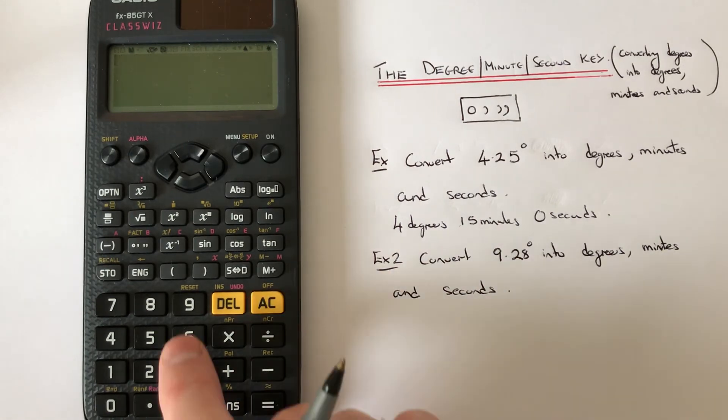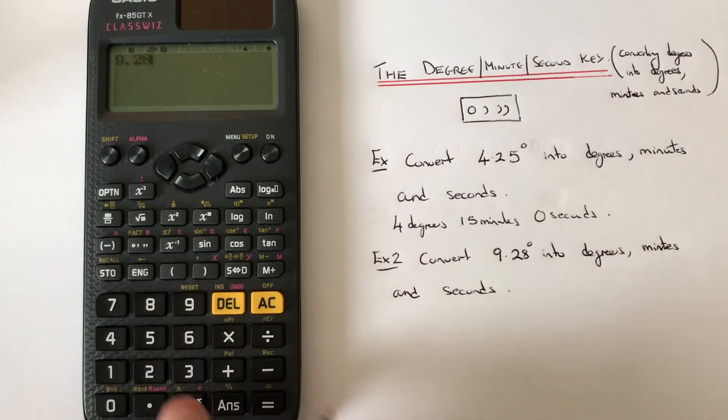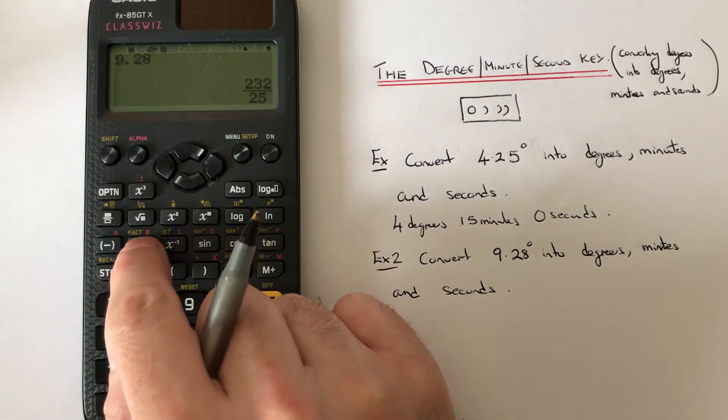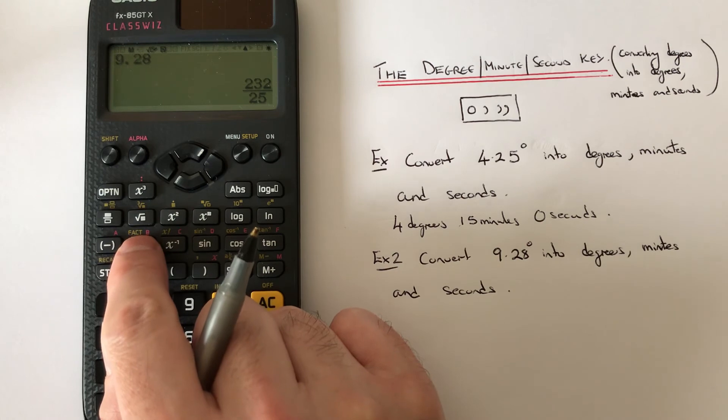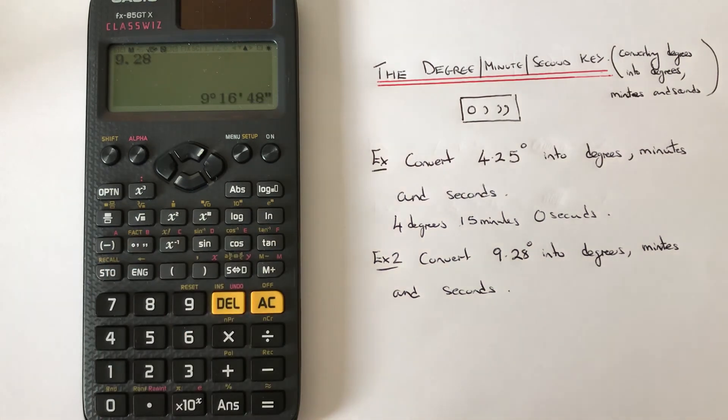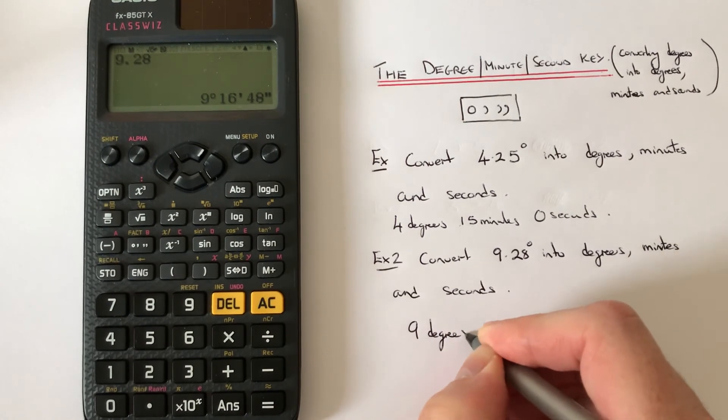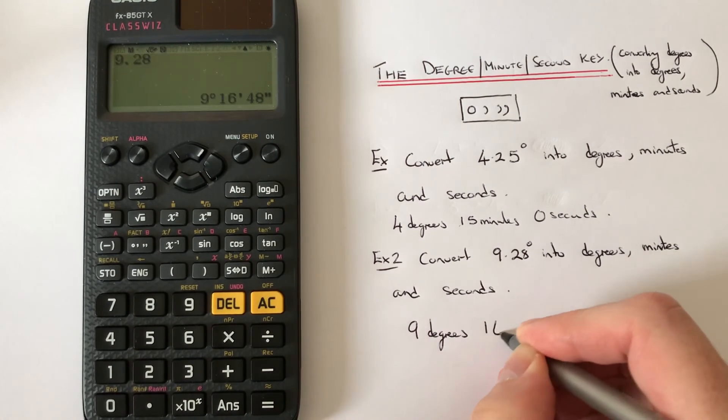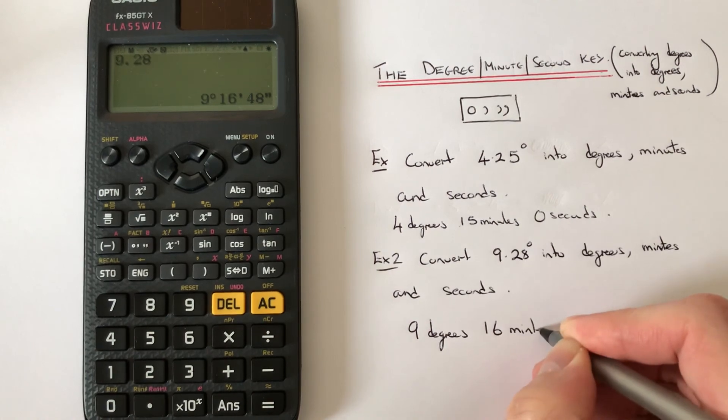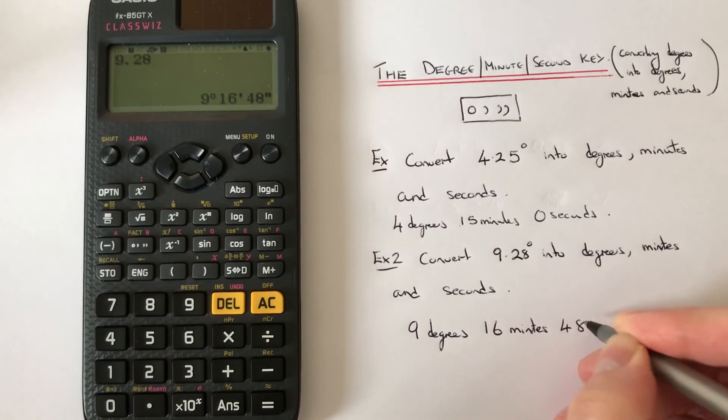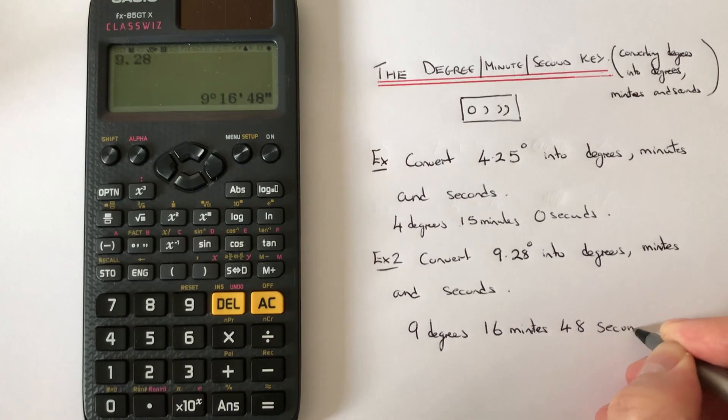So again if we press 9.28, hit the equals key and then we press the degrees, minutes and seconds key. So this time we have 9 degrees, 16 minutes and 48 seconds.